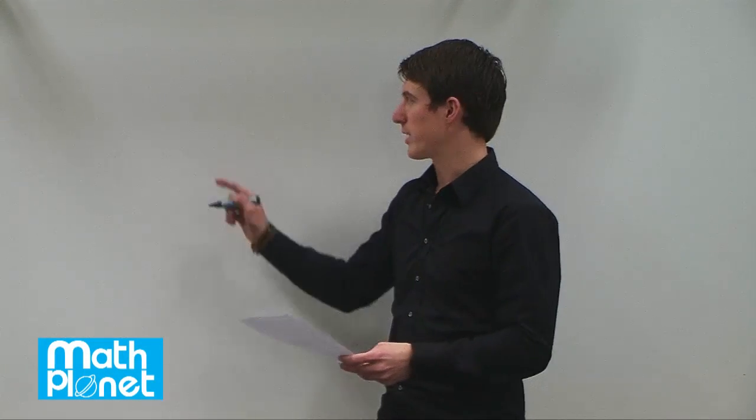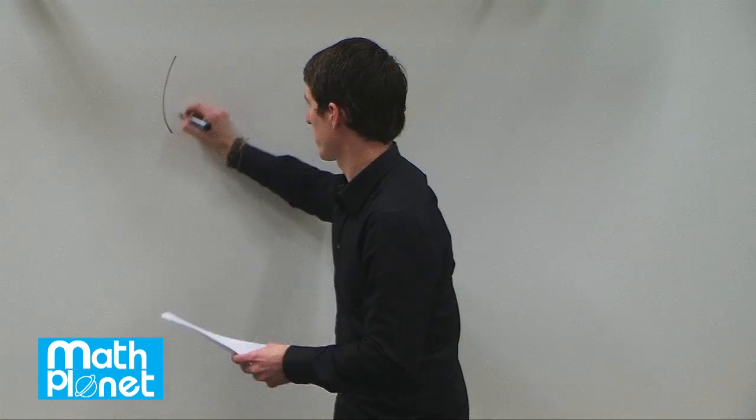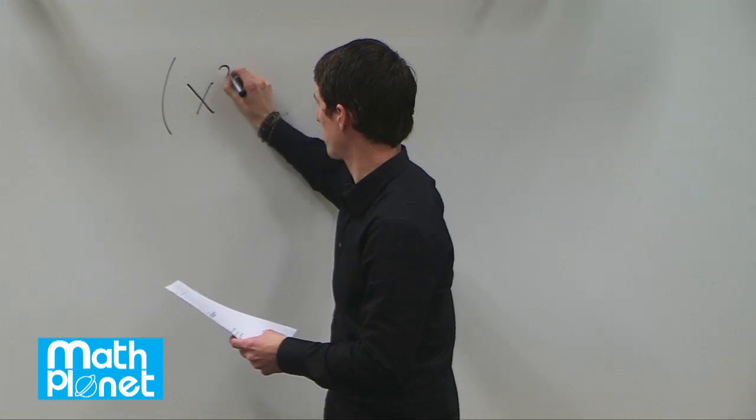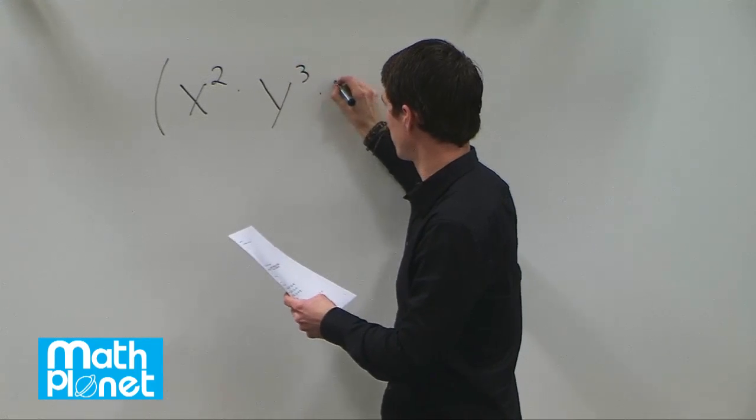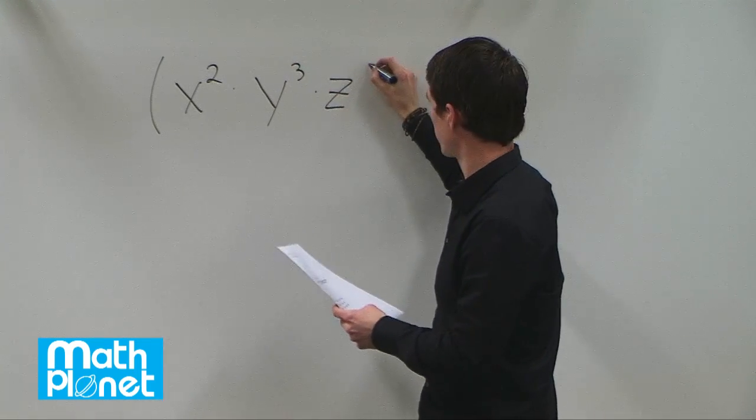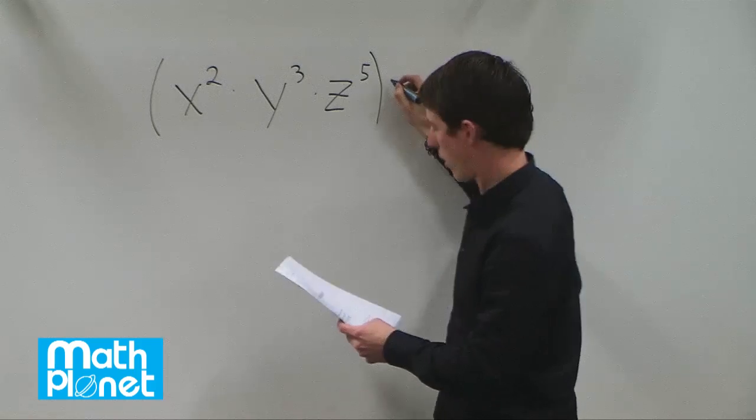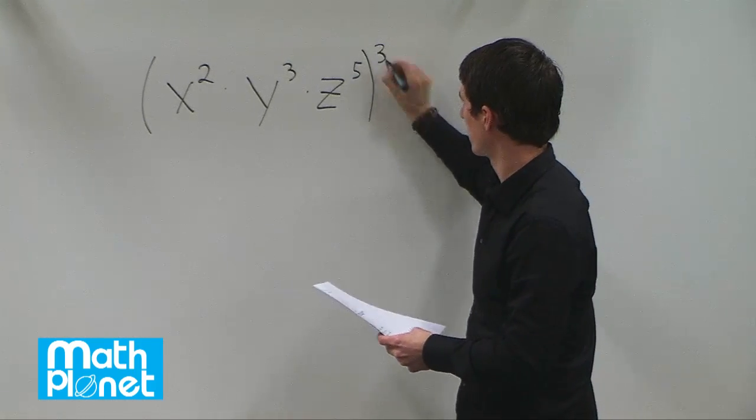Here we have an expression with indices and we want to simplify it as much as possible. So the expression reads x squared times y cubed times z to the power of 5, and all of that, that whole quantity, is cubed.